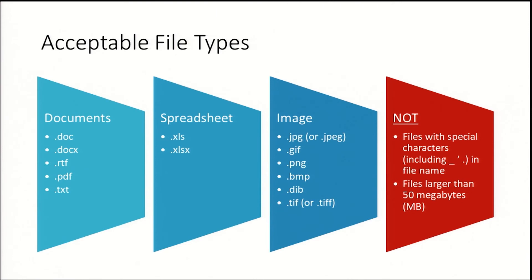HEROES accepts a range of different document types as seen on this slide. However, HEROES cannot process files with special characters including underscores, periods, and apostrophes in the file name. HEROES can handle some very large documents including most Phase 1s and Phase 2s, but may not be able to process some documents larger than 50 megabytes. If you find that a document isn't uploading or if you're having other issues with a review, a good place to start is checking whether your files have any special characters, as that will cause your reviews to experience larger problems.